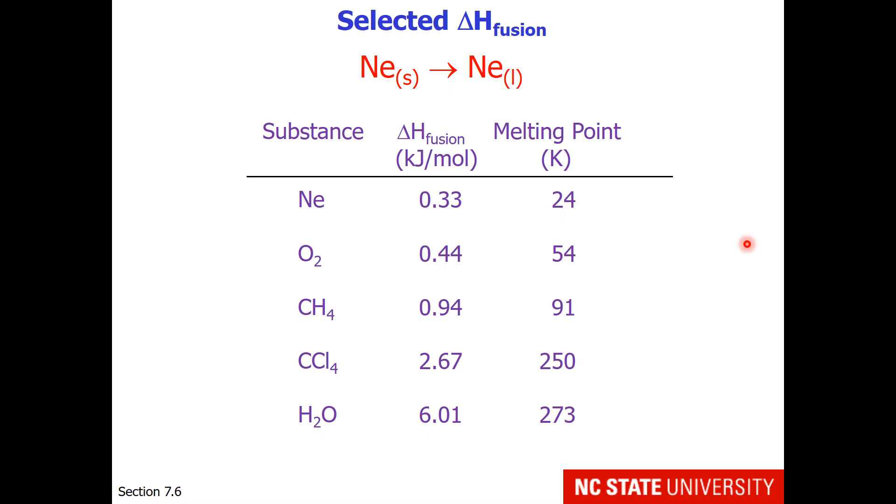Here are some selected enthalpies of fusion for various molecules. If we start with neon the gas, you notice that its enthalpy of fusion is very low, does not take much energy to go from solid to liquid phase, and that melting point is 24 degrees Kelvin. You notice as we increase in the intermolecular forces up to water, the enthalpy of fusion increases, and the melting point also increases.